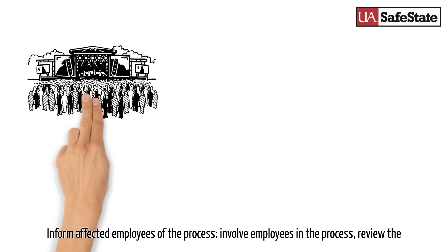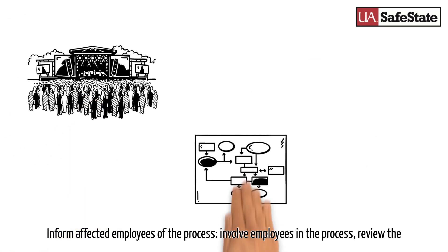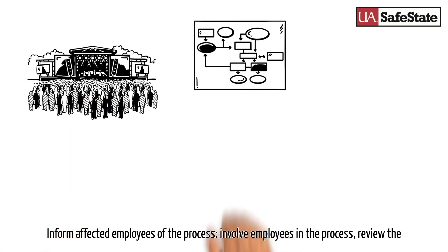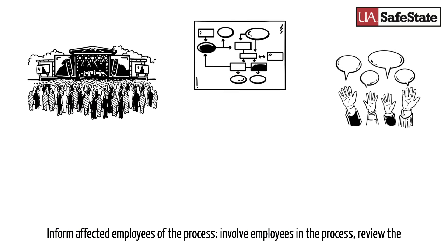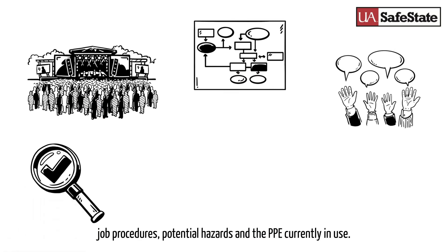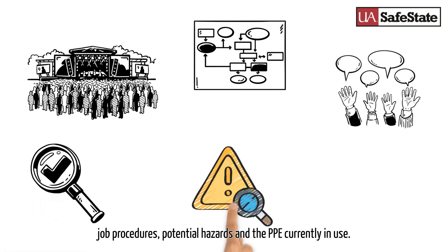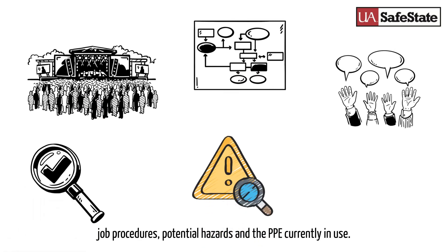Step one: Inform affected employees of the process. Step two: Involve employees in the process. Step three: Review the job procedures, potential hazards, and the PPE currently in use.